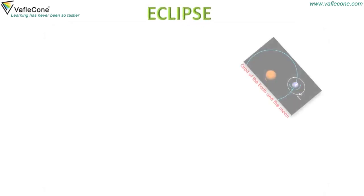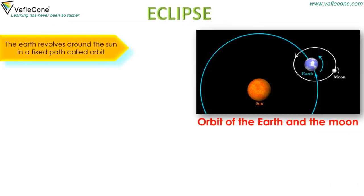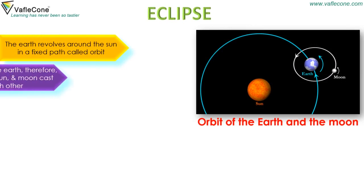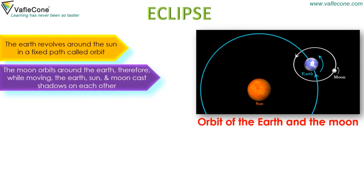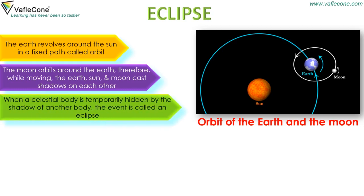Eclipse. The earth revolves around the sun in a fixed path called orbit. The moon orbits around the earth. While moving, the earth, sun, and moon cast shadows on each other. When a celestial body is temporarily hidden by the shadow of another body, the event is called an eclipse.